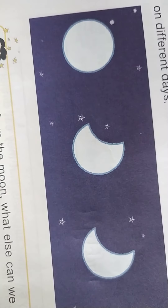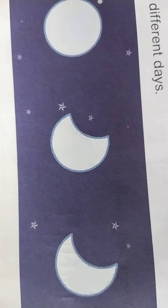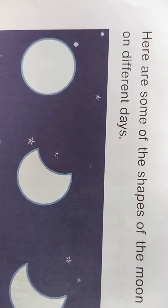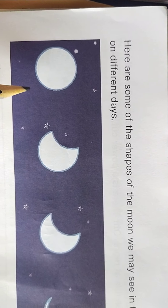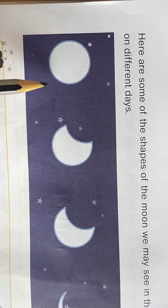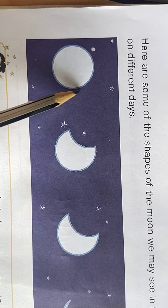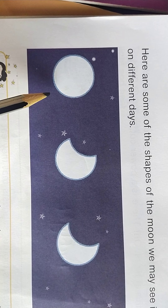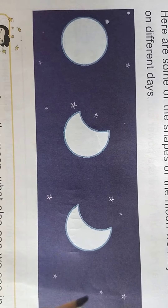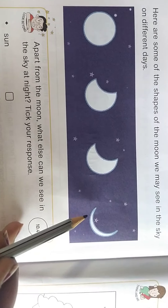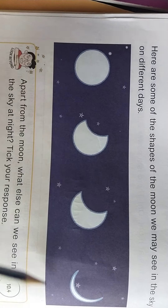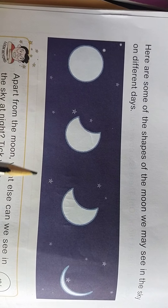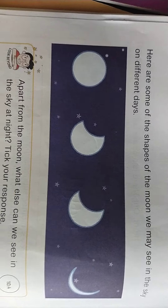Page number 54. Here are some shapes of the moon we may see in the sky on different days. First, we are observing the full moon - round shape. After that, another shape - like that, different shapes we are observing. We will go for next Activity 10.4.